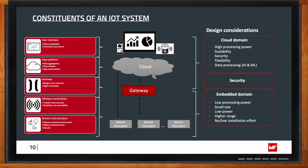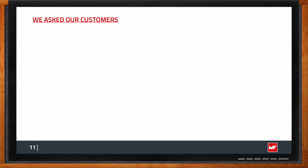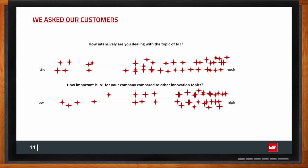Würth Elektronik conducted a survey to find out what interests their customers with respect to IoT. One question was how intensively customers are dealing with IoT. As you can see, the concentration of people actually dealing with IoT is increasing — a trend seen post-pandemic, where a lot of projects that were on hold have been pushed to full speed. The question of how important IoT is for innovation in the company also shows a lot of interest, considered one of the most important innovative topics.